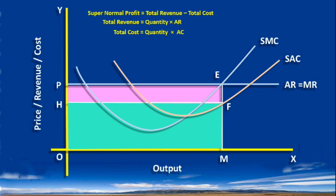OPEM minus OHFM is equal to HPEF. This is the Super Normal Profit. Thus, the Short Run Equilibrium firm can earn Super Normal Profit under Perfect Competition.